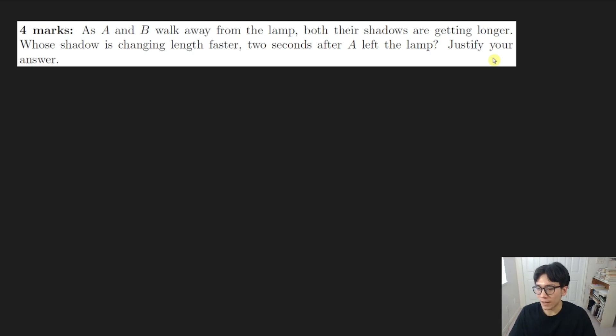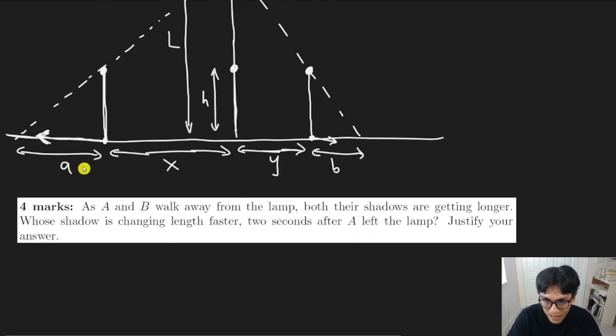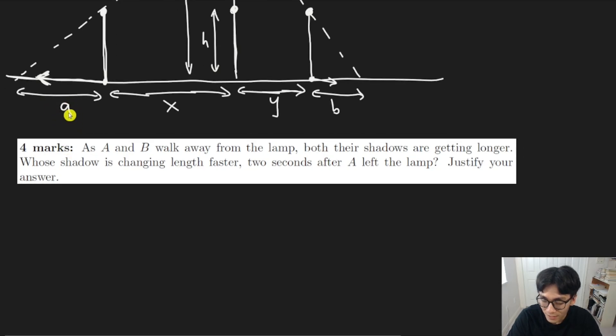Now the question is, what are we actually trying to find? Well, we're trying to figure out whose shadow is changing length faster. So the rate of change of person A's shadow is how fast little a is changing. In other words, dA/dt. That is the rate of change of A's shadow. And similarly, the rate of change of B's shadow is dB/dt. Okay. So these are the two rates that we want to compare. It turns out we're not going to be able to figure out the exact values of either of these, but we are going to be able to figure out the relationship between them. And in particular, we want to find the relationship between them when t equals two seconds.